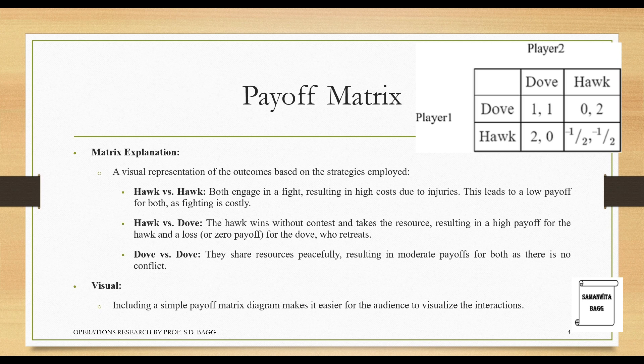Payoff matrix — a visual representation of the outcomes based on the strategies employed. Hawk versus Hawk: both engage in a fight resulting in high costs due to injuries, leading to a low payoff for both as fighting is costly.